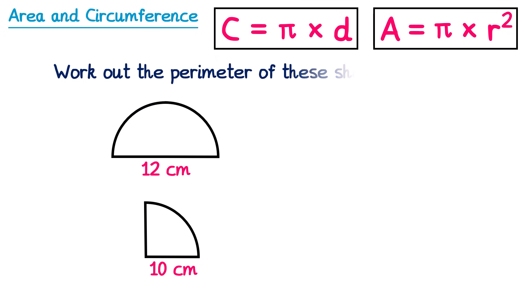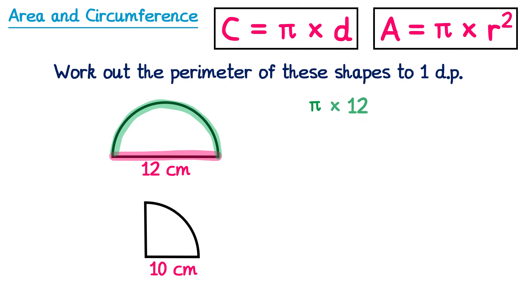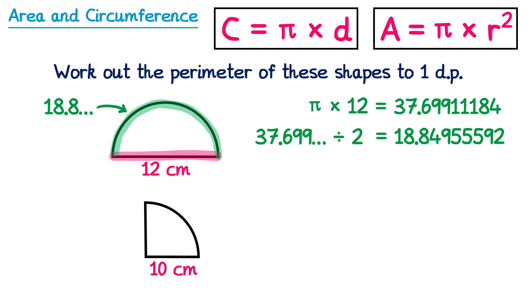What about working out the perimeter of these shapes? Note that the word circumference is used specifically for a full circle — for semicircles and quarter circles we say perimeter. The perimeter of the semicircle is in two pieces: a straight piece of length 12, and a curved piece. The curved piece is half of the circumference of the full circle: pi times the diameter 12, then divided by 2. The green curved line is 18.8 and so on. Adding this to the straight section of 12 gives 30.8cm.